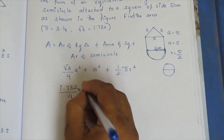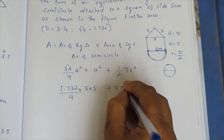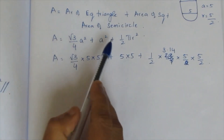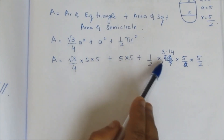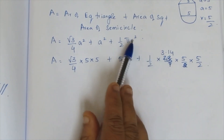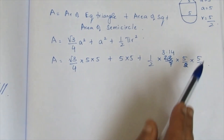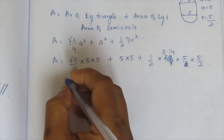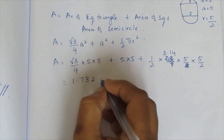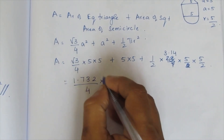Now we substitute. Area of equilateral triangle: √3 = 1.732, divided by 4, times a² = 5 × 5 = 25. Plus area of square: 5 × 5 = 25. Plus area of semicircle: (1/2) × 3.14 × (5/2)². Substituting: 1.732 divided by 4, into 25.